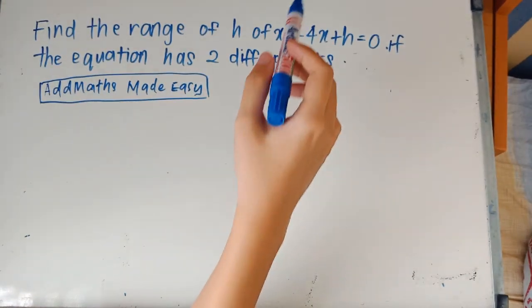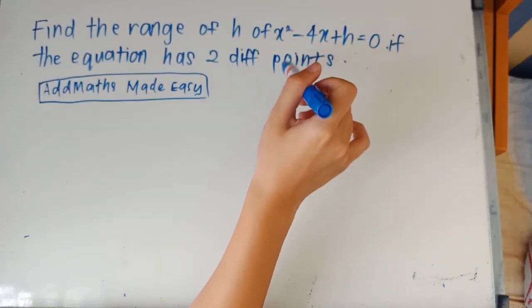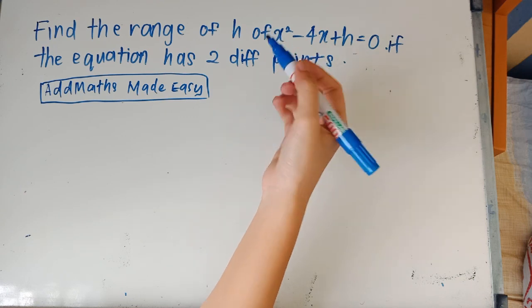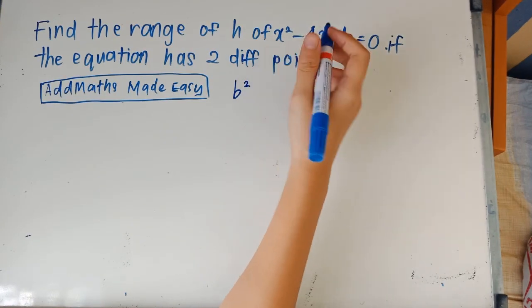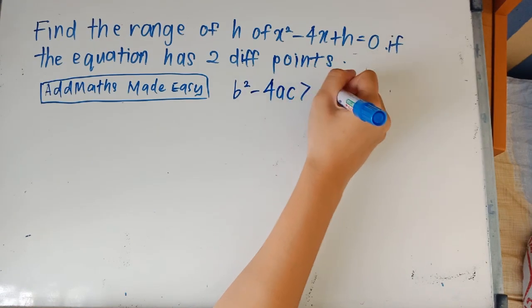But from that video you would see that if an equation has two different points, the equation or expression that you want to remember is that b squared minus 4ac will be bigger than zero.